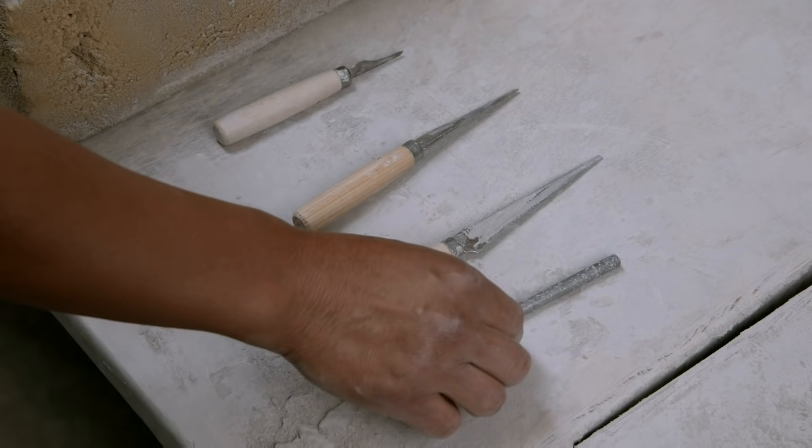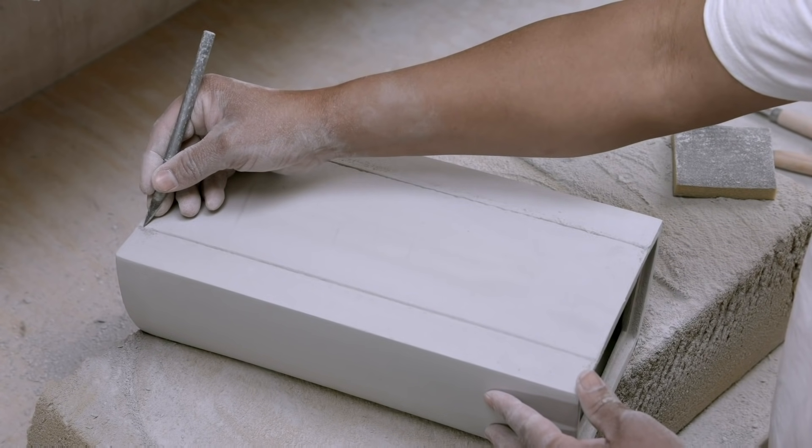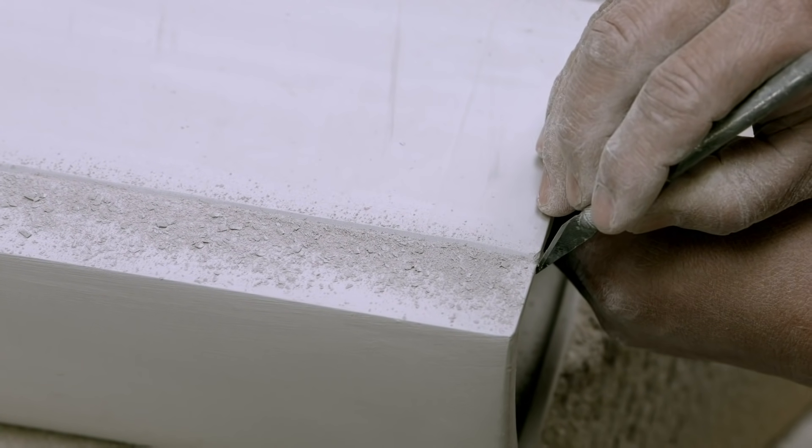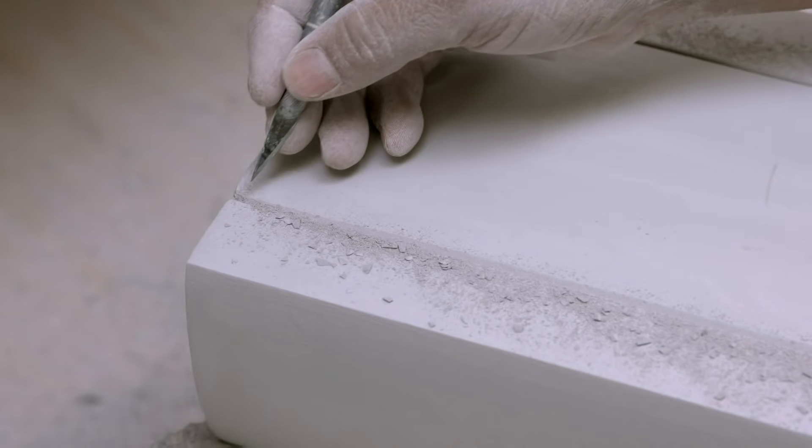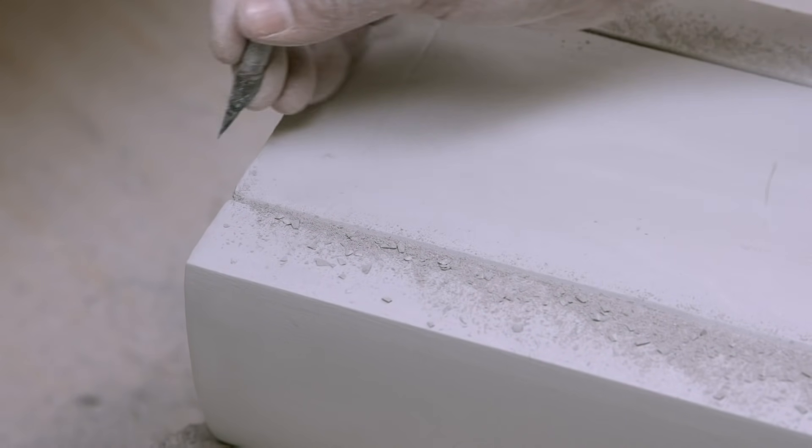Next is to create the opening for the glass pane. First, lines are scored into the still fragile clay, which are deepened until the excess can be easily removed.